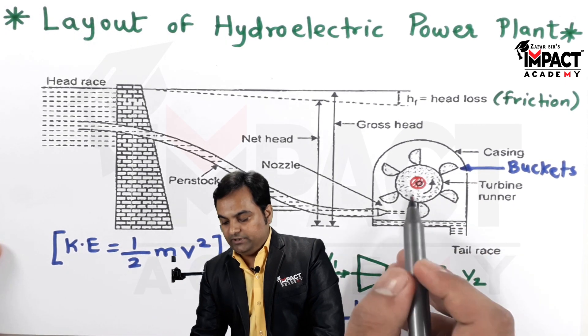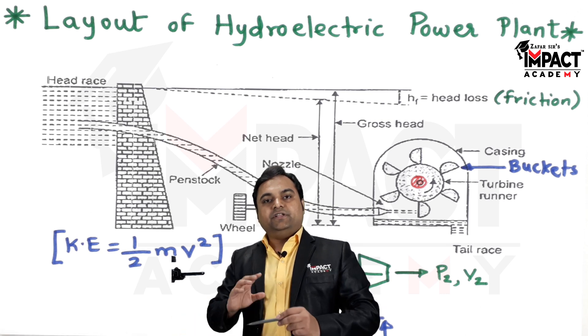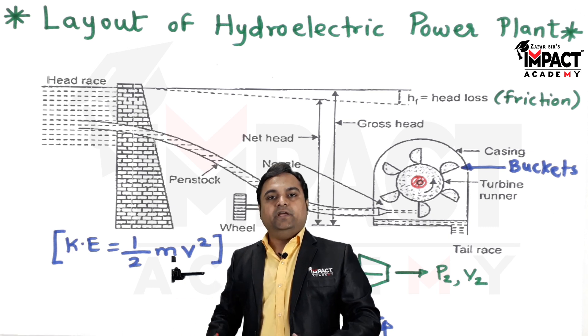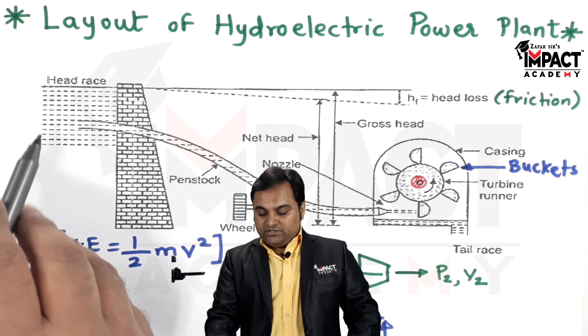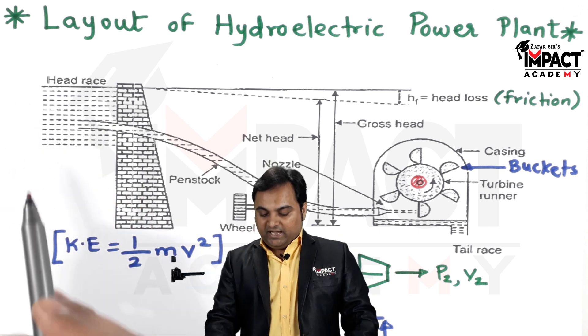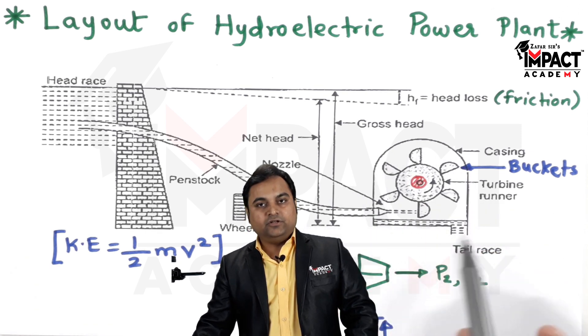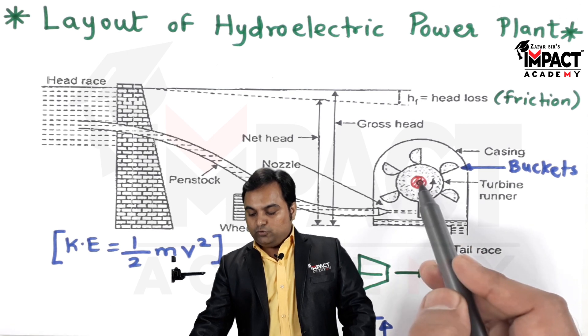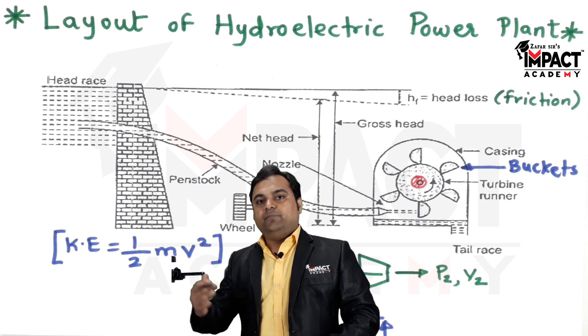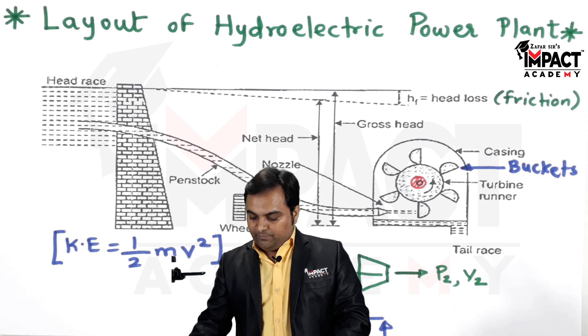So we are getting the work output at this shaft, and this shaft will be connected to a generator. In the generator there would be conversion of mechanical energy into electrical energy. In this way the power generation takes place—starting from the head race, the potential energy of the fluid is very high. That potential energy gets converted into kinetic energy, and at the turbine runner we are getting the rotation or the shaft work. When the shaft rotates, that same work is transferred to the generator where the conversion of mechanical work takes place into electrical energy, and we are producing electricity with the help of this hydroelectric power plant.